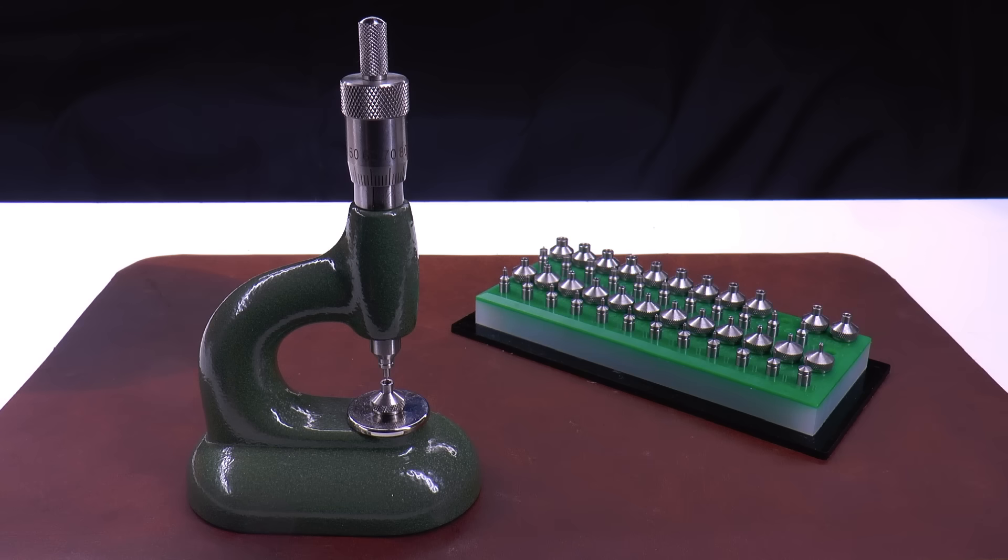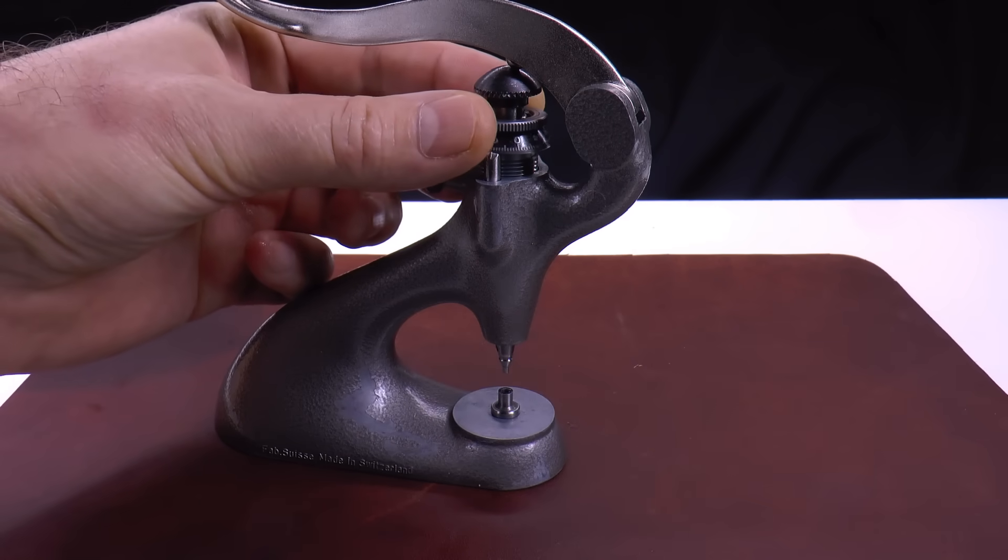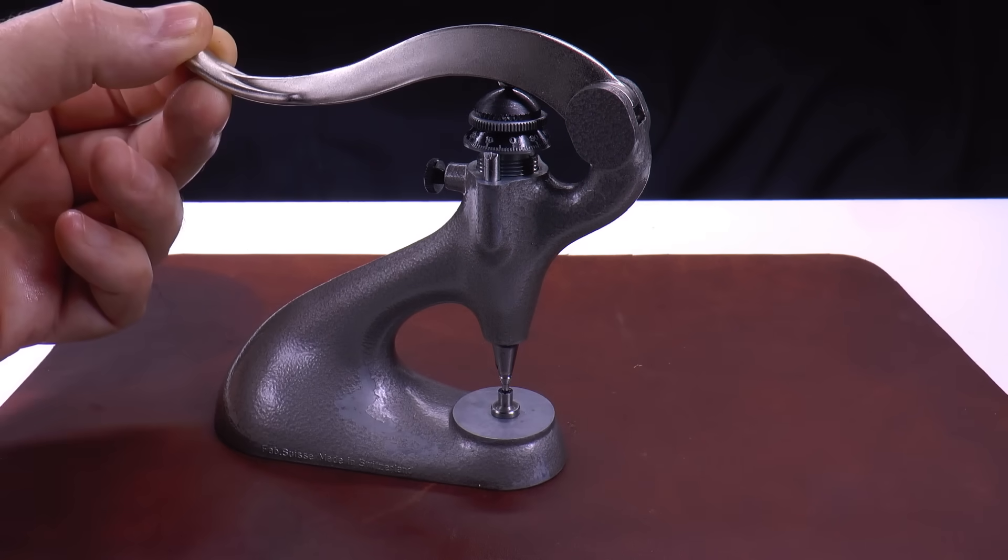Another type, a lever style tool, has a similar micrometer idea as a limit stop but uses a spring-loaded plunger driven by the lever to apply the closing pressure.